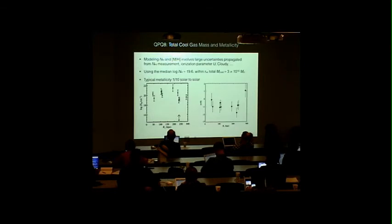With Cloudy's ionization corrections, we can calculate the total NH and the metallicity. But I want to emphasize there are large error propagations from various sources such as NH1 measurements, ionization parameter modeling, and the Cloudy assumptions. Using the median NH value 19.6, we found that within the virial radius, the total mass of the cool-phase CGM is 3 times 10 to the 10 solar masses. And the metallicity is typically 1 tenth solar, and sometimes it can approach solar.